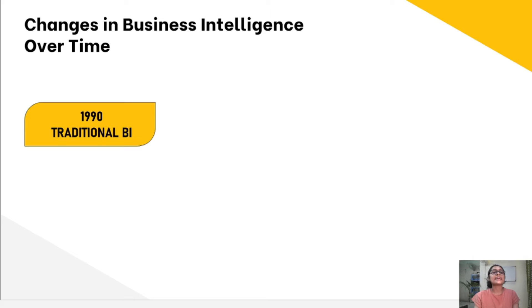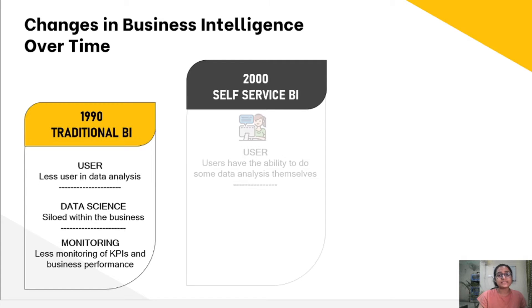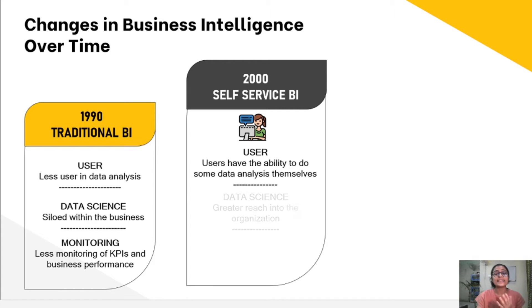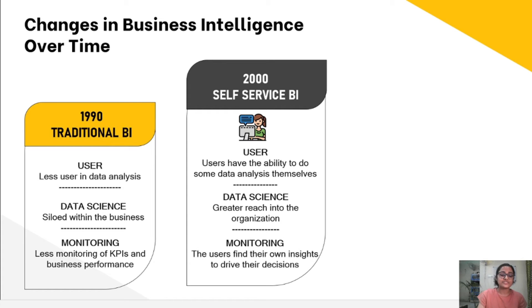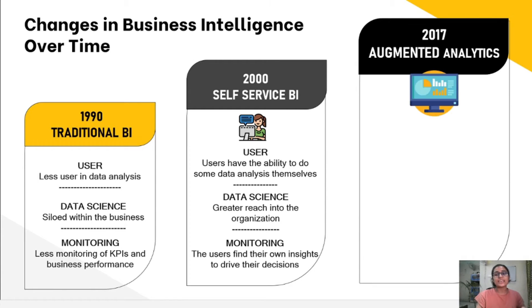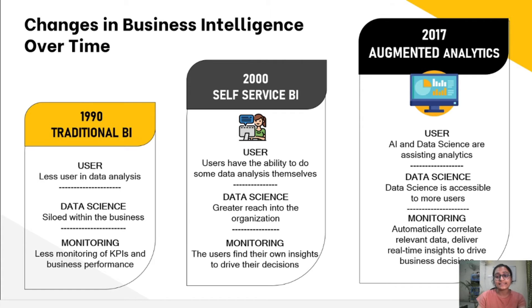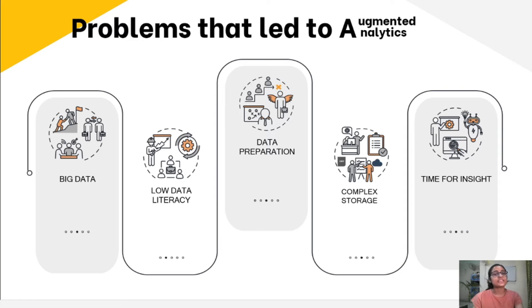Business intelligence has been with us since the 1990s, when people began to consider gaining information from business data as important. Initially there were very few users in data analysis and data science was not prioritized within businesses. By 2000, self-service BI emerged where organizations hired people to analyze data. Then in 2017, augmented analytics arrived, where business was supported by AI and data science to know more about their own businesses.